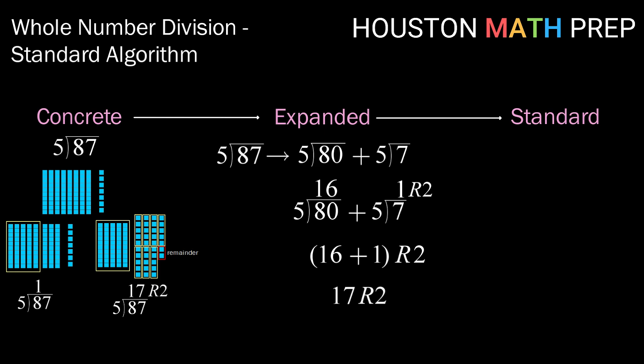All right, now connecting that to our standard division algorithm, here we go. We first start by asking, how many groups of 5 are in 8? Well, there's one group of 5. If we subtract that away, we find that there are 3 items left over.